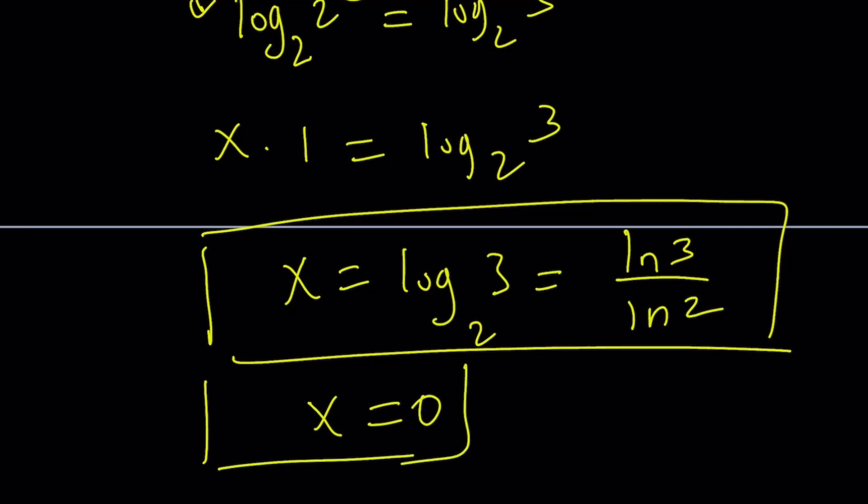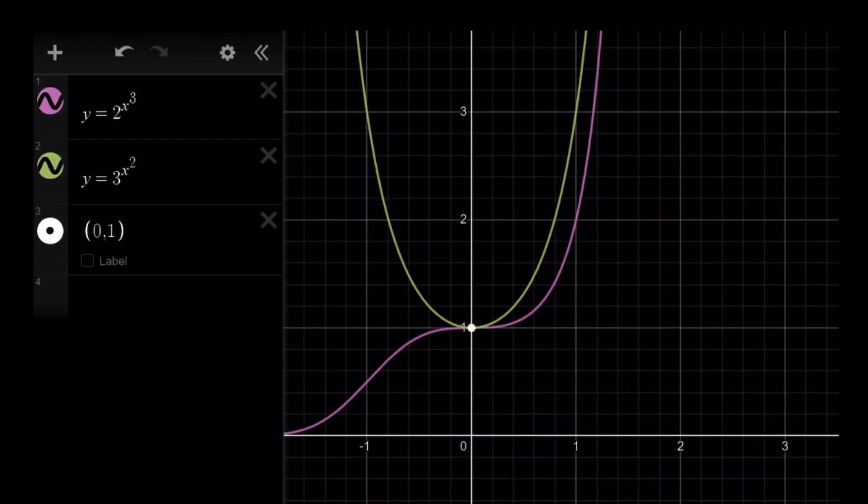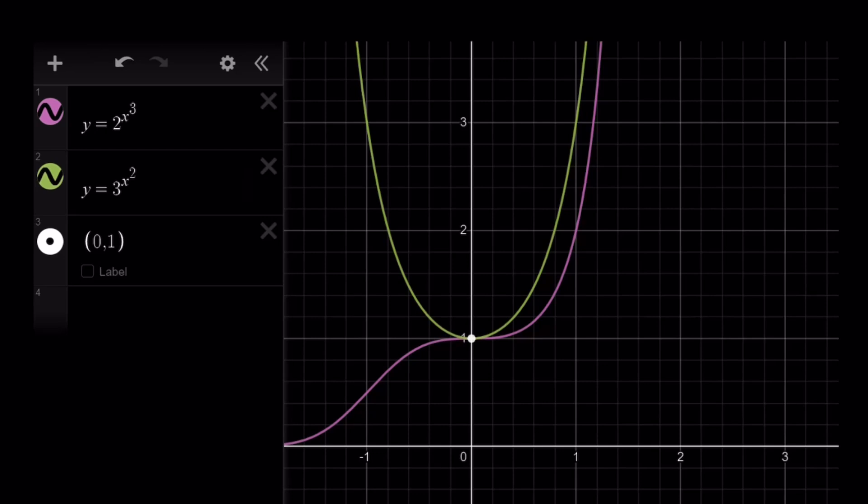So there are two solutions. Let's take a look at the graph real quick. Unfortunately, because of scaling issues, I wasn't able to show you the other solution clearly. But here's what happens. Obviously, these two graphs will pass through 0, 1, so they'll intersect. Therefore, x equals 0 is going to be a valid solution.